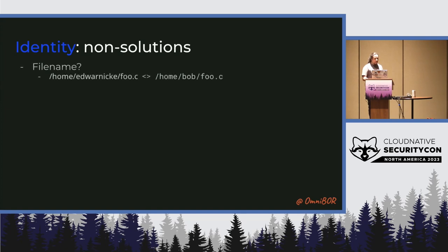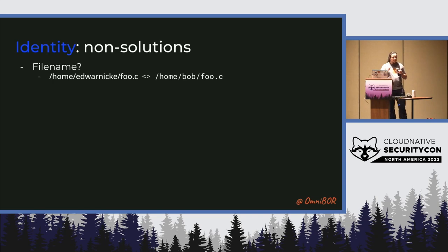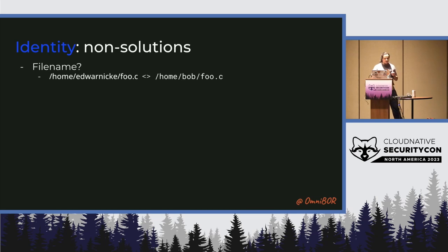Some identity non-solutions we ran into: you'll often see in many SBOMs the idea that the file name is the identity of something. But file data is actually metadata — it's not the identity, because your file name can change. I can change foo.c to bar.c, or I can change what's in foo.c to something else, so the identity should change. If I move it to a different directory, has it changed? Or what if I take that file and stick the entire contents into a database with no file name? File names are good for locating things, but not good for defining the identity of something.